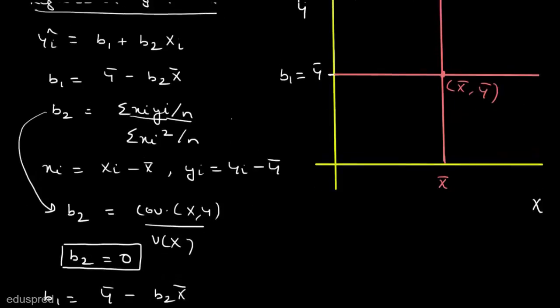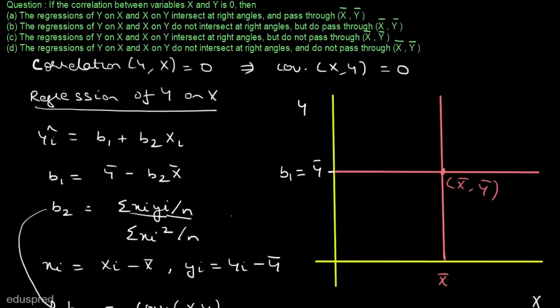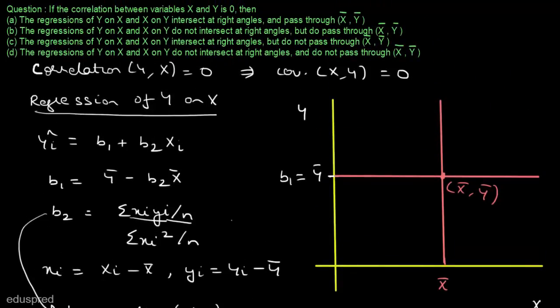So the right answer is part a, which states that the regressions of y on x and x on y intersect at right angles. As we can see, the two lines intersect at right angles and pass through x̄, ȳ. So part a is the correct answer.